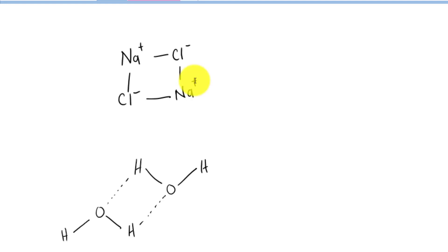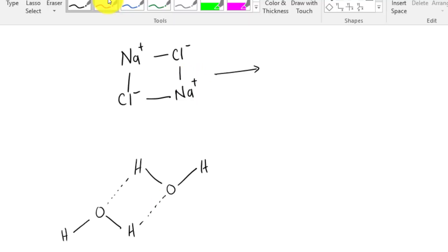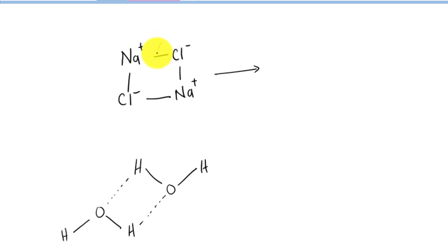First of all, we have the ionic compound and water or solvent. The first step is that we need to break this intermolecular force, and what's going to happen is that we are going to make Na plus and Cl minus.